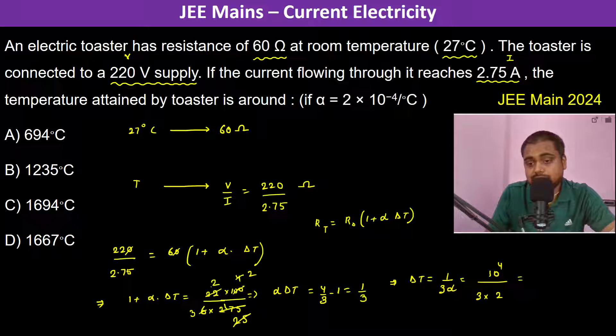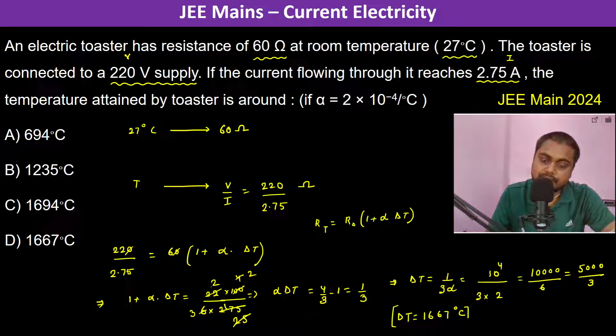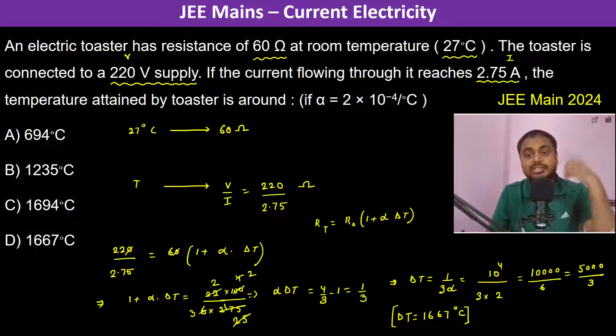So this is 10,000 divided by 6, which is 5,000 divided by 3, which is 1,667 degrees Celsius. So this is Delta T. Now initially it was at 27 degrees Celsius, so therefore...